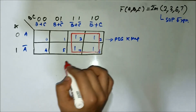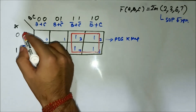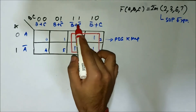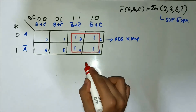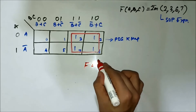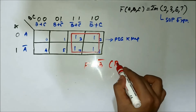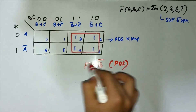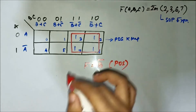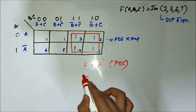Next is the identification of common variables. In the horizontal side, nothing is common because here it is A and here it is A complement. On the vertical side, we have B-bar common. So F equals B-bar — but this is a POS expression because we are using a POS map. Since we want it in SOP form, we simply take the complement.